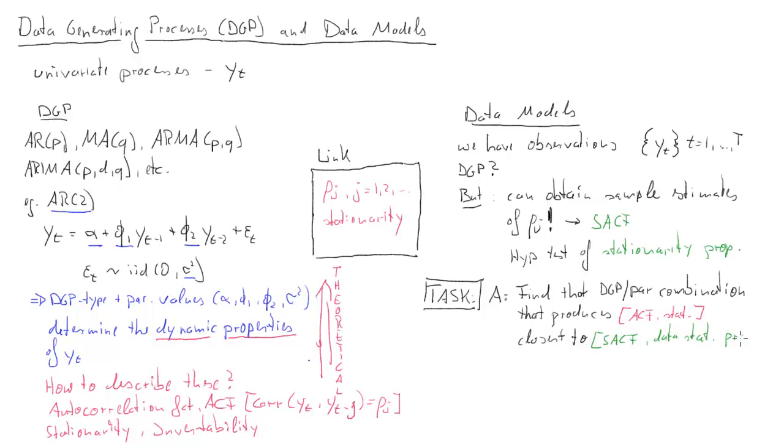What we want to find is that best combination of DGP type and parameters that best matches the sample autocorrelation function and the data stationarity properties. Basically matching the theoretical ACF of a DGP and parameter combination with the sample autocorrelation function. This approach is often called the Box-Jenkins approach. It's not used that often anymore. There's a more modern approach.